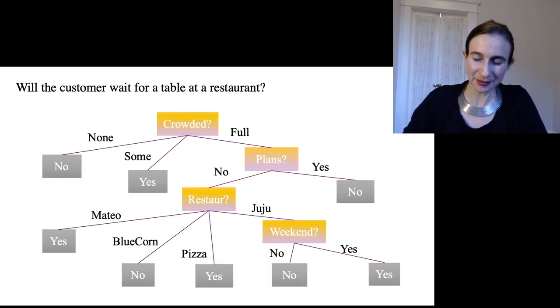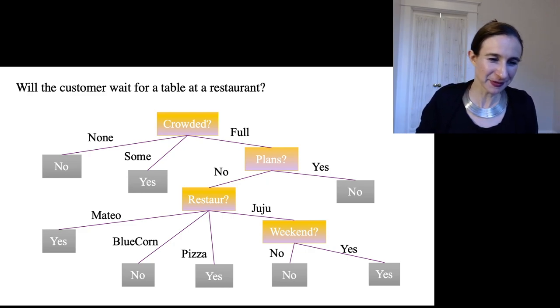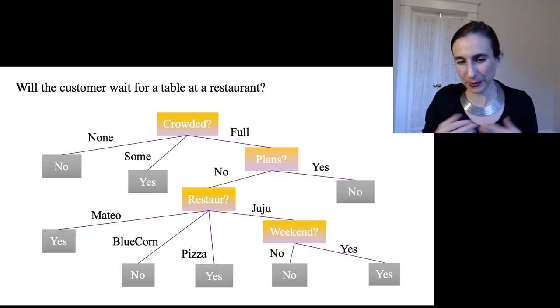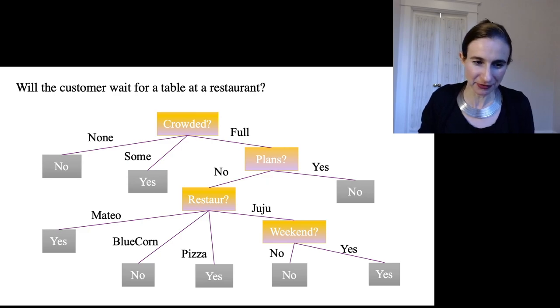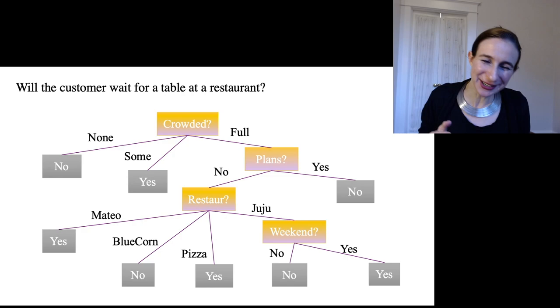So this is an example of a decision tree that we might construct from these data. We might ask first whether or not it's crowded. If it's not crowded maybe the customer will say I don't want to wait for a table. If there's some people in there maybe the customer will wait. If the restaurant is full then maybe we want to know if the customer has plans, because if they have plans they may not want to wait for the table. And if they don't have plans, well it depends which restaurant it is—if it's Mateo maybe they would wait, Blue Corn maybe not, and so on.